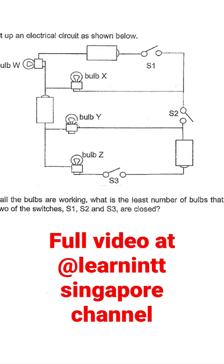You'll see three batteries, four bulbs, and three switches. Given that all the bulbs are working, what is the least number of bulbs that can light up when any two of the switches, switch one, switch two, and switch three, are closed?